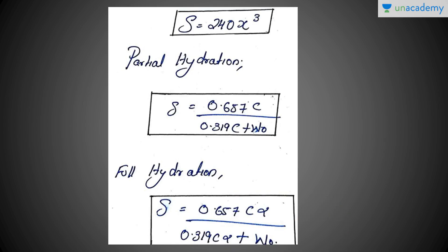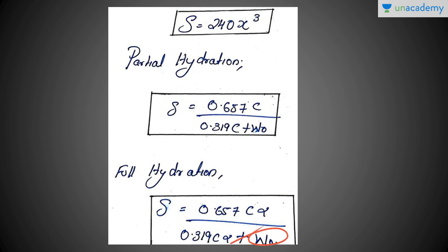Let's recap the equations once more. The Power's Equation is: S = 240X³, where X is the gel space ratio. For complete hydration: X = 0.657C / (0.319C + W₀). For partial hydration: X = 0.657Cα / (0.319Cα + W₀), where alpha is the fraction of cement that has hydrated.